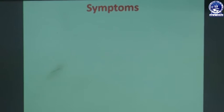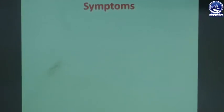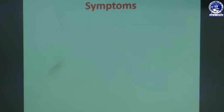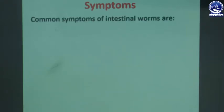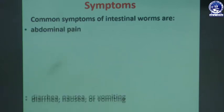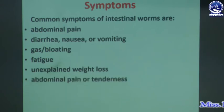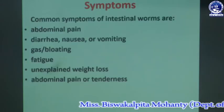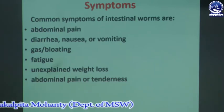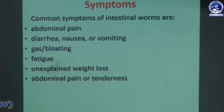Next we will discuss about different symptoms related with intestinal worms, and the signs through which we can detect that a person is suffering from intestinal worm infection. Common symptoms of intestinal worms are abdominal pain, diarrhea, nausea or vomiting, gas or bloating, fatigue, and unexplained weight loss.